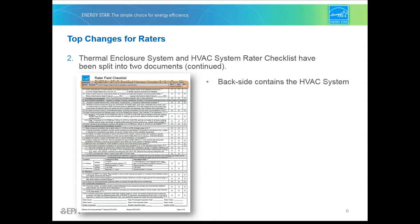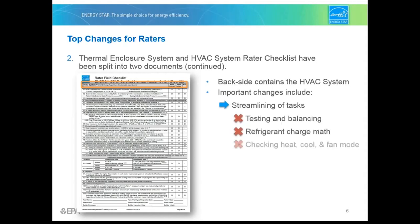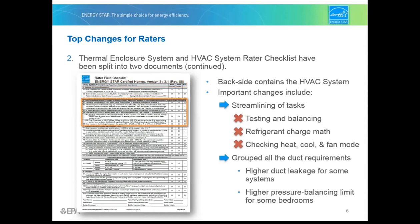The back of the rater field checklist contains the requirements for the HVAC system and includes some important changes. We streamlined the rater tasks, and items related to testing and balancing, refrigerant charge map, and checking the heating, cooling, and fan mode have been removed, among others. We've combined all of the duct requirements into one section, provided higher duct leakage limits for systems serving small spaces and systems with three or more returns, and a pressure balancing limit of five pascals instead of three for bedrooms with a design airflow of greater than 150 CFM.